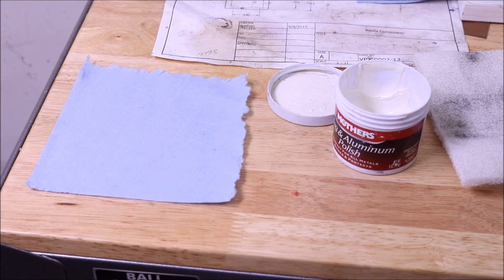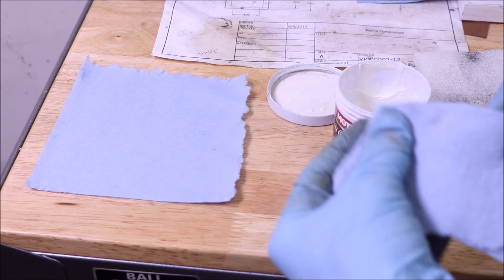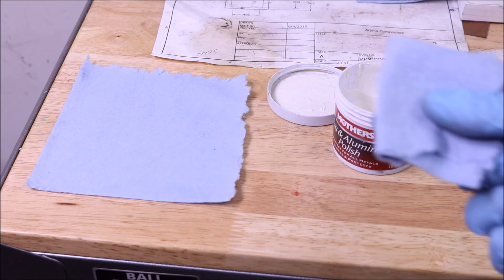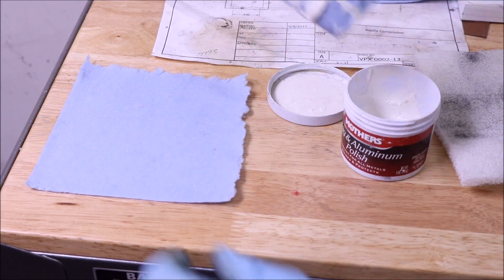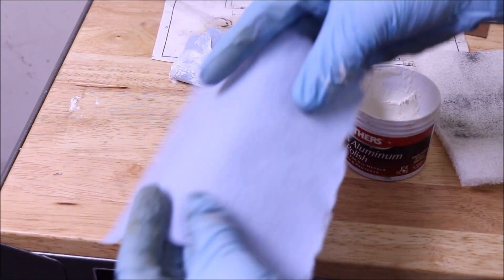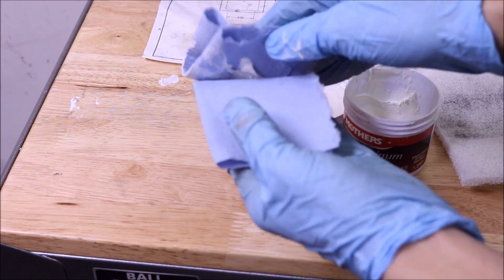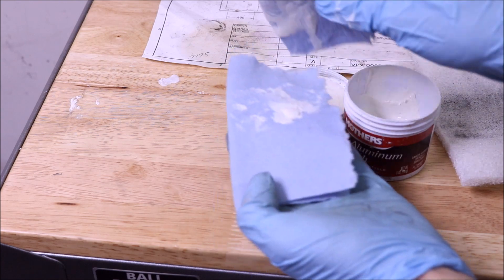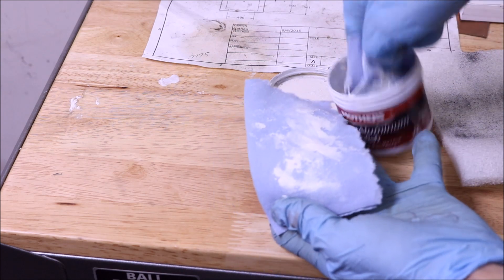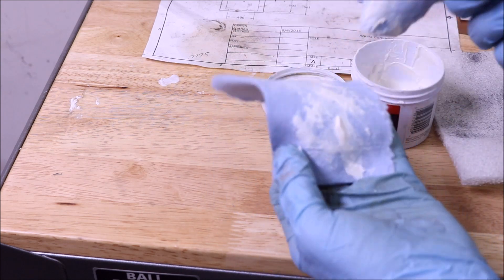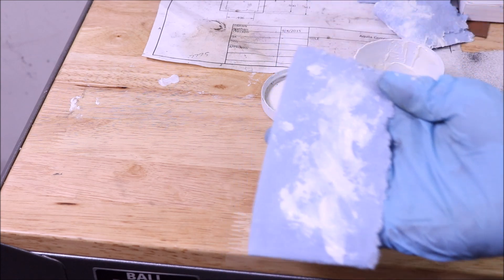To apply the Mother's to the cloth I take another clean cloth and fold it over enough that I can cover a finger with it. I grab an amount of the Mother's, folding the towel in half and apply it to the towel. If you're working on a lathe you don't want to apply it directly to the part as it will splatter off and just create a big mess. Once it's on the rag I'm ready to go.